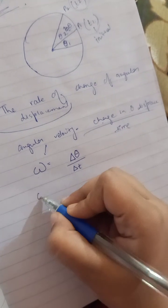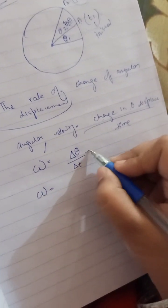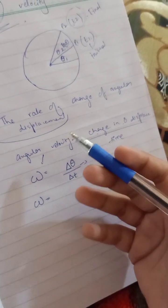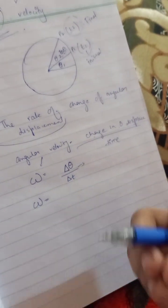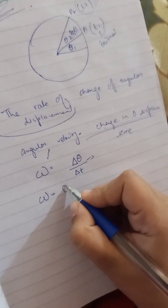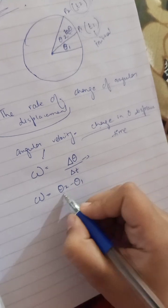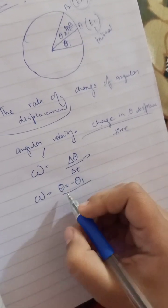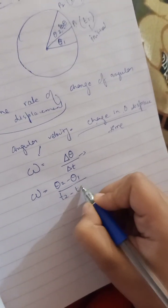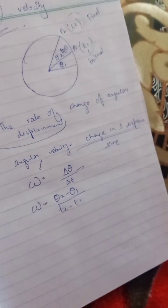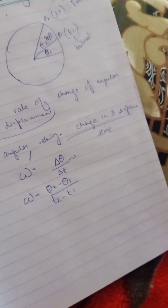So omega equals the change in angular displacement over the change in time, which we can write as: omega = (θ₂ − θ₁) / (t₂ − t₁), where theta 2 minus theta 1 is the angular displacement change, and t2 minus t1 is the time interval.